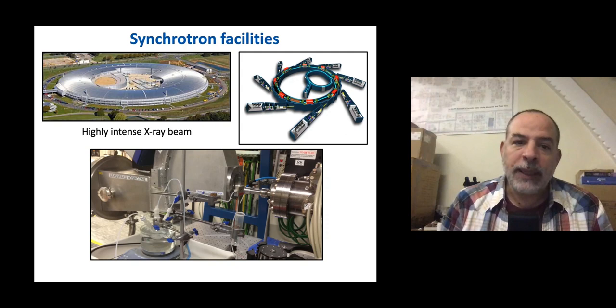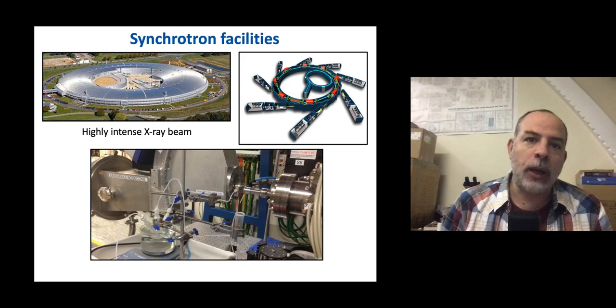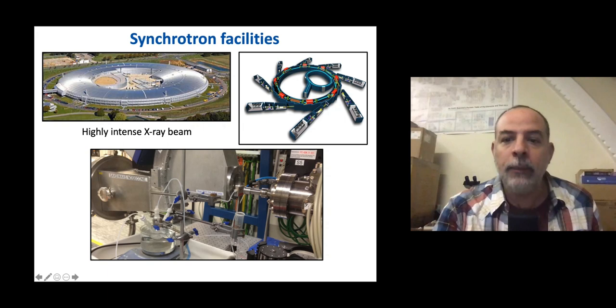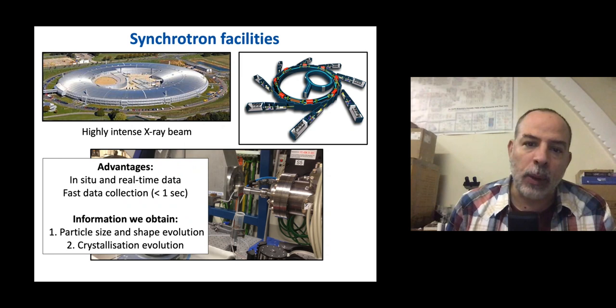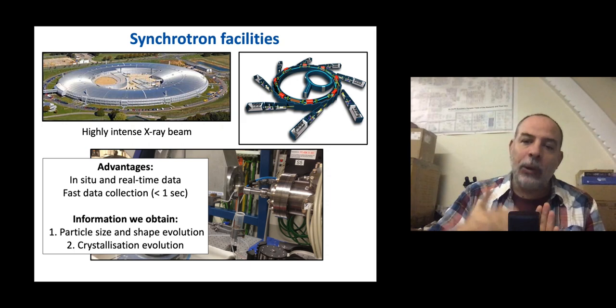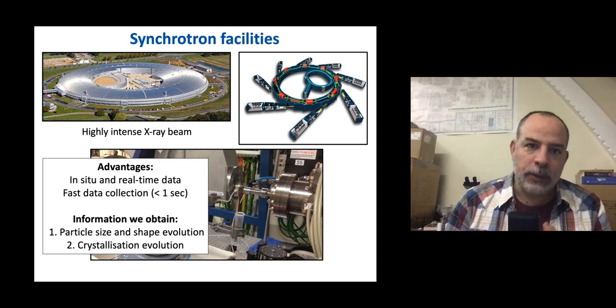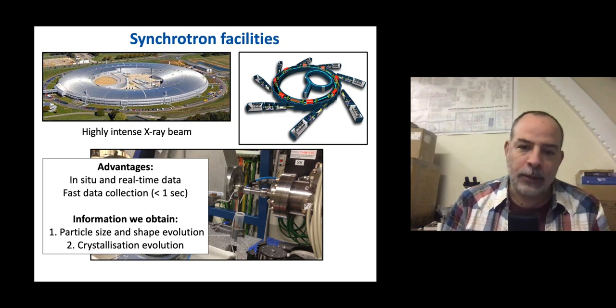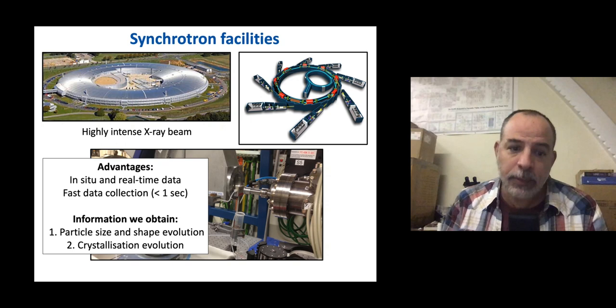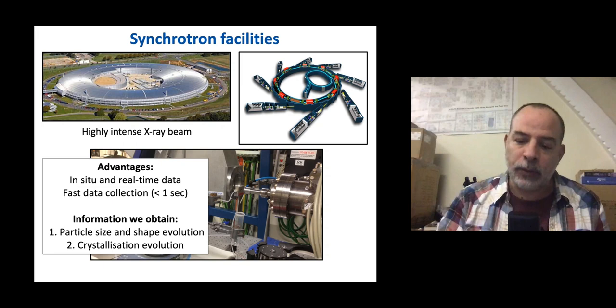For synchrotron-based experiments we use facilities like Diamond Light Source in the UK or Argonne National Laboratories in the USA. We select a beamline using two techniques: small-angle and wide-angle X-ray scattering. This allows us to obtain data very quickly — every second or less — giving us information on particle shapes, size distribution, and the evolution of crystallization, including what phases are forming and transforming. This yields very useful mechanistic and kinetic data.